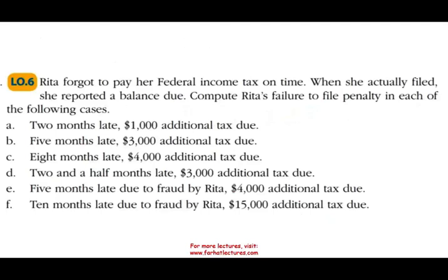Let's look at another example. Rita forgot to pay her federal income tax on time. Compute Rita's failure to file penalty in each situation. She was two months late with $1,000 due: 5% times 2 months times $1,000 equals $100. However, remember there is a minimum — the minimum amount will apply here, so be careful on the exam. She filed five months late with $3,000 due: 5% times 5 months times $3,000 equals $750.